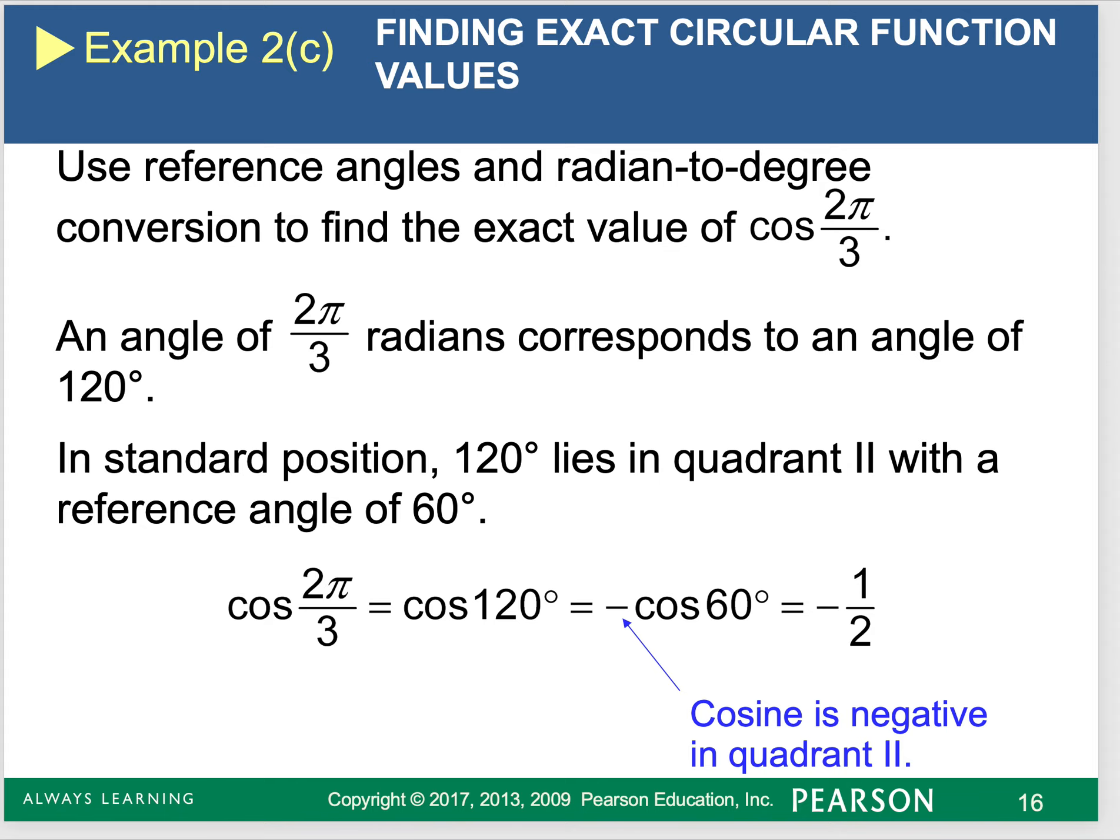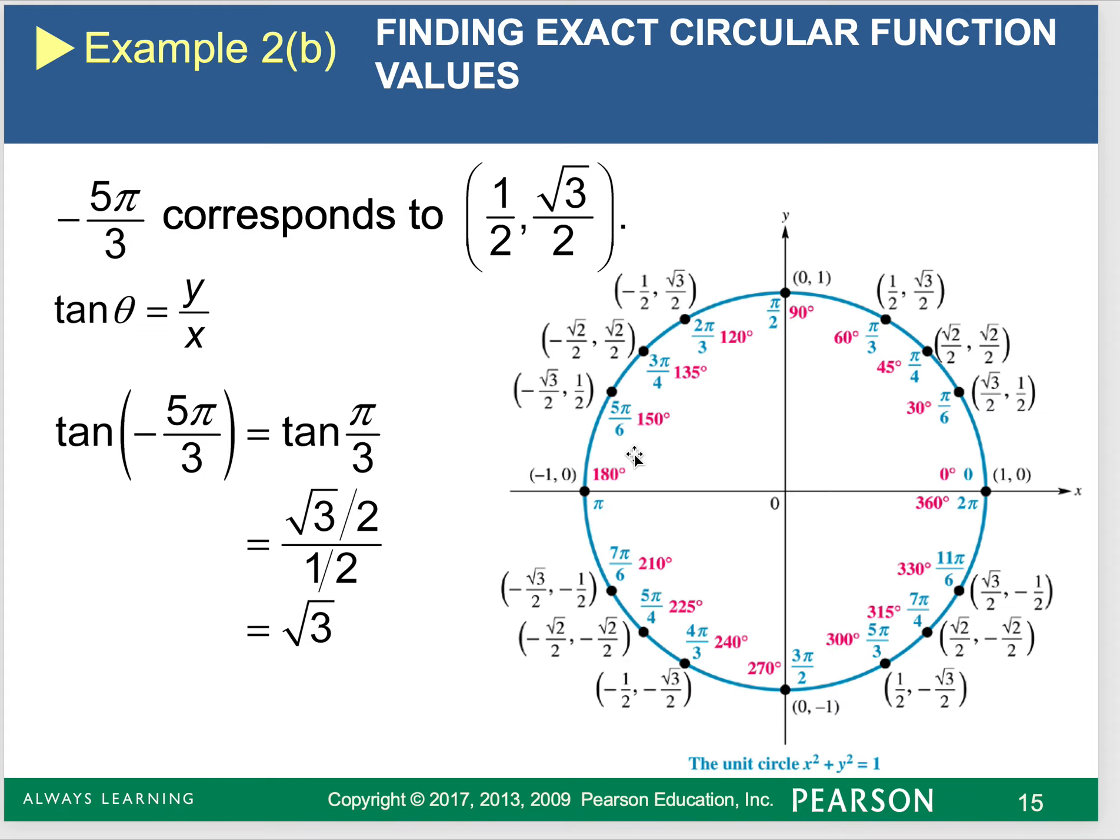But because it's in quadrant 2, cosine is negative. That's the image I told you guys to print out a few weeks ago. So my answer would be cosine of 120. I have negative 1 half, so it's going to be negative 1 half.